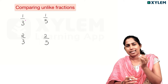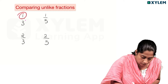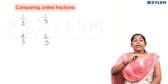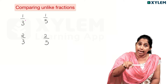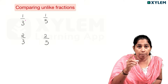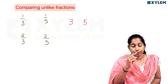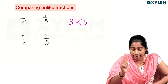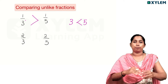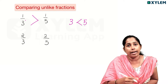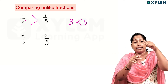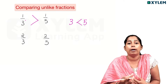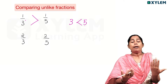For unlike fractions, we compare fractions differently. When the numerators are the same, we look at the denominators. For example, 1 by 3 is bigger than 1 by 5, and 2 by 3 is bigger than 2 by 5, because the denominator 3 is smaller than 5.